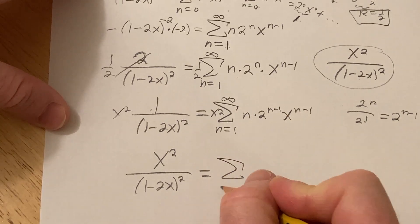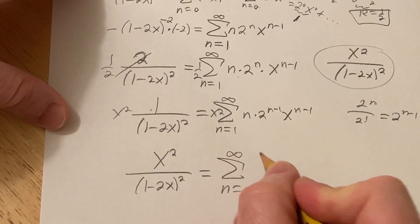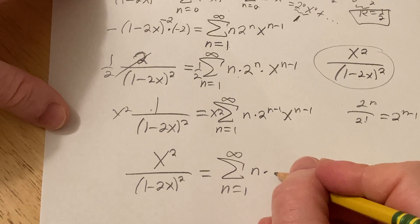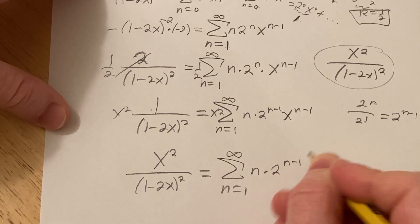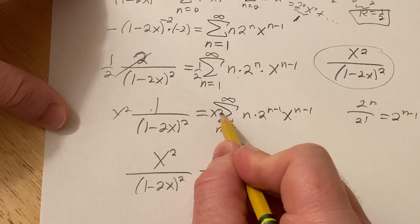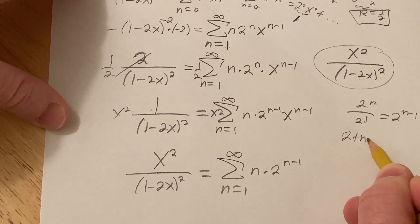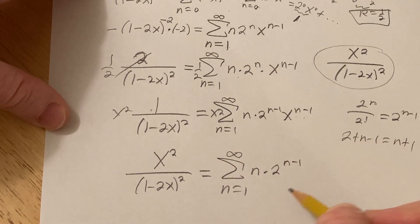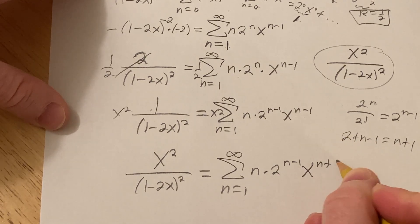So you get infinite sum, and it runs from 1 to infinity. n times 2 to the n minus 1. And then when you multiply this times this, you add the exponents. 2 plus n minus 1. That's n plus 1. So you get x to the n plus 1.